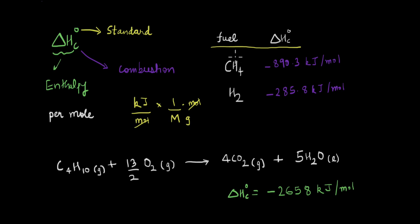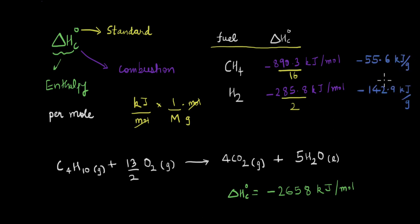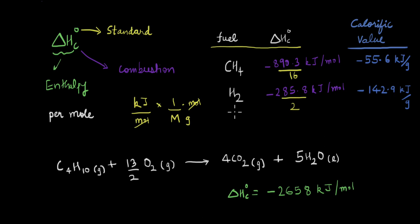The molar mass of methane is 16, so I divide by 16. For hydrogen, the molar mass is 2, so I divide by 2. Calculating this, I get minus 55.6 kilojoules per gram for methane and minus 142.9 kilojoules per gram for hydrogen. This value obtained by dividing the standard enthalpy of combustion by the molar mass is called the calorific value. By comparing calorific values, we can say that hydrogen gives more energy per gram than methane, and so it is a better fuel.